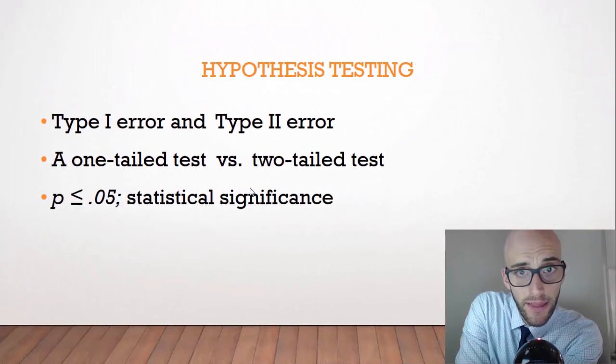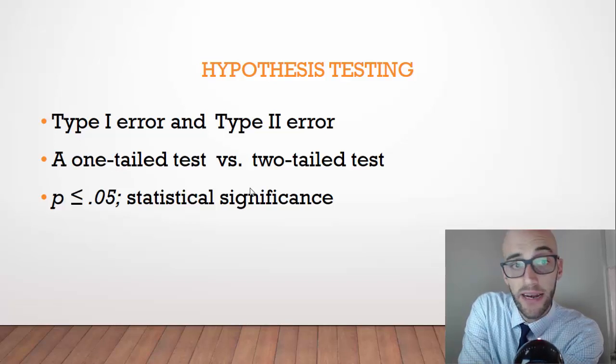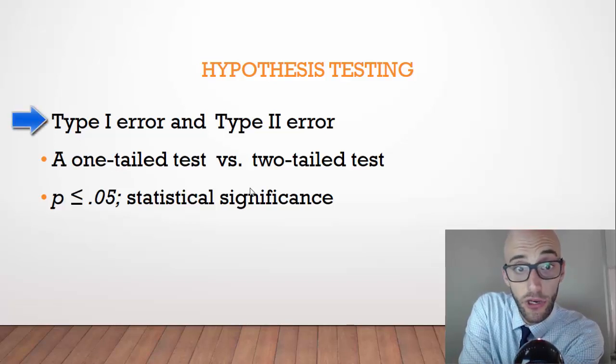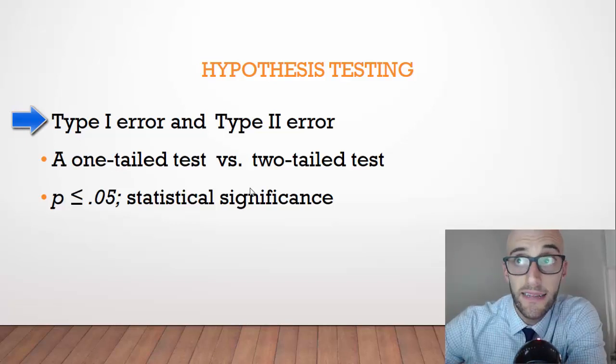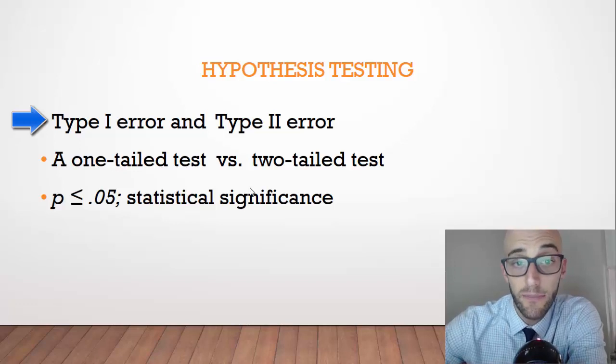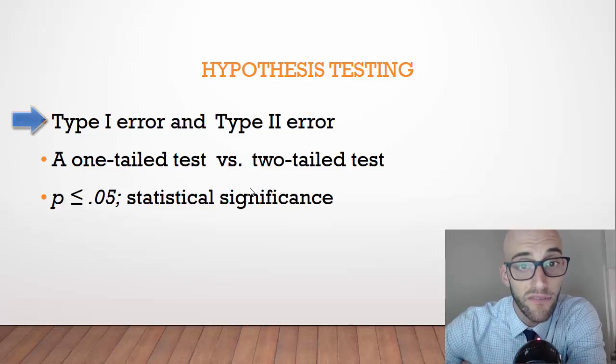Okay, so some important things to know for this quiz include hypothesis testing. When we're doing hypothesis testing, we're trying to reduce both Type I and Type II error. Type I error is when we reject the null hypothesis when it's actually true. Type II error is when we accept or fail to reject the null hypothesis when it's actually false.